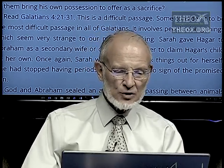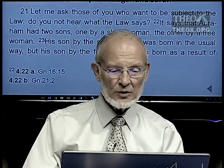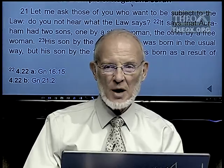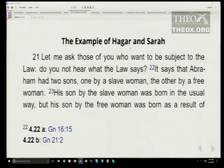Look at Galatians 4:21 to 31 — this is the passage we're focusing on. Paul says: Let me ask those of you who want to be subject to the law, do you not hear what the law says? It says that Abraham had two sons, one by a slave woman, the other by a free woman. His son by the slave woman was born in the usual way, but his son by the free woman was born as a result of God's promise.